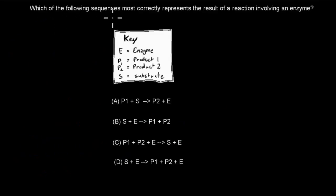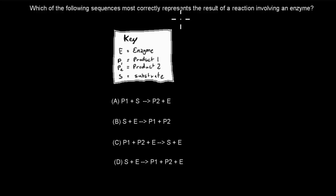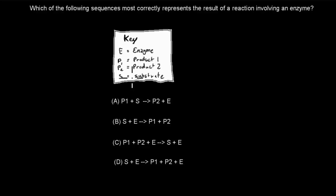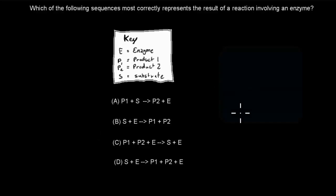The next question: Which of the following sequences most correctly represents the results of reactions involving an enzyme? The key is: E = enzyme, P1 = product 1, P2 = product 2, S = substrate. Choose from the given combinations. Pause the video and attempt the question.